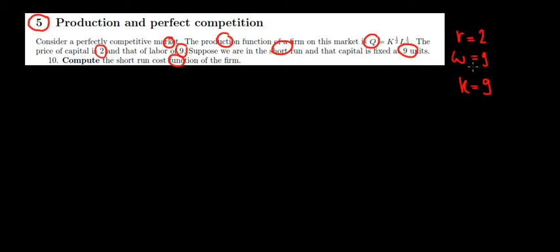So I wrote some data here on the right to keep track easier. Now, let's start working. We know that capital is fixed, so we can find our production function in terms of labor only. So if we work out the math over here, what do we get?